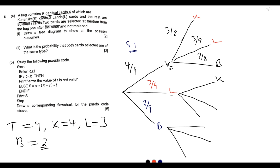Given L was selected first: K has not changed, so it is four out of eight. L has reduced by one since we selected one L already, so it is two out of eight. We did not select B on the first selection along this branch, so we still have two out of eight for B.